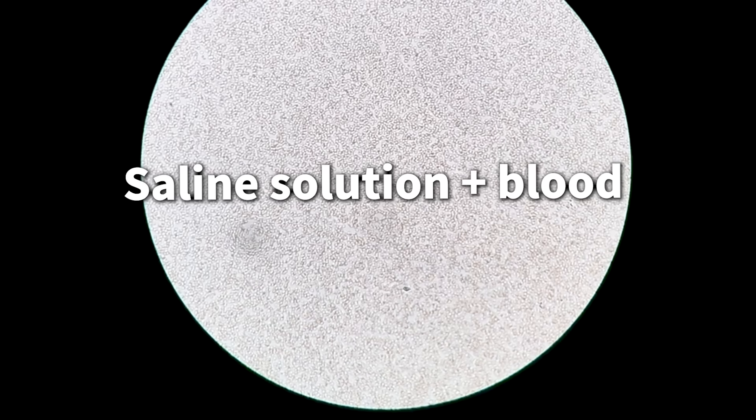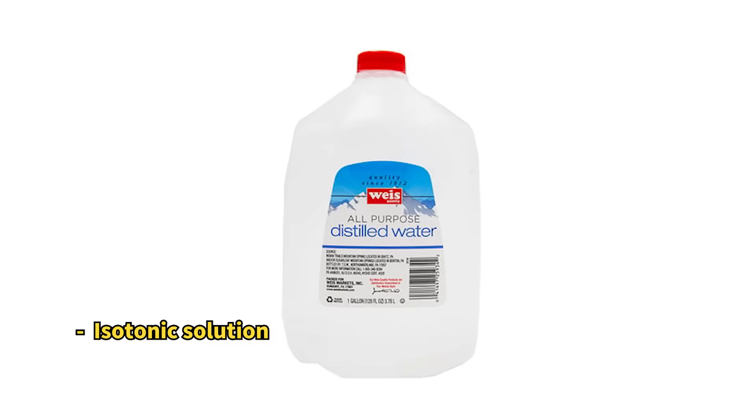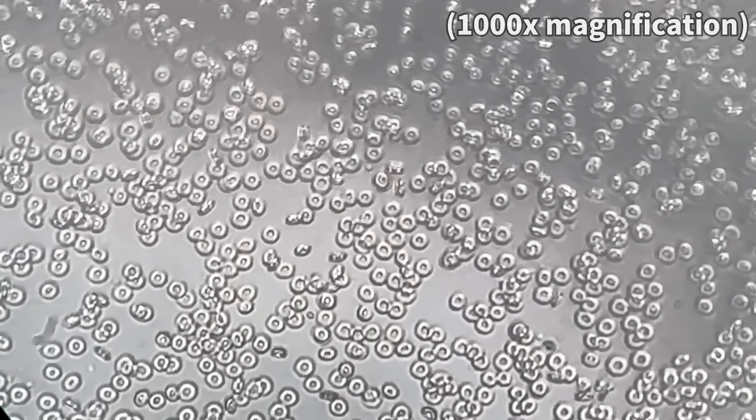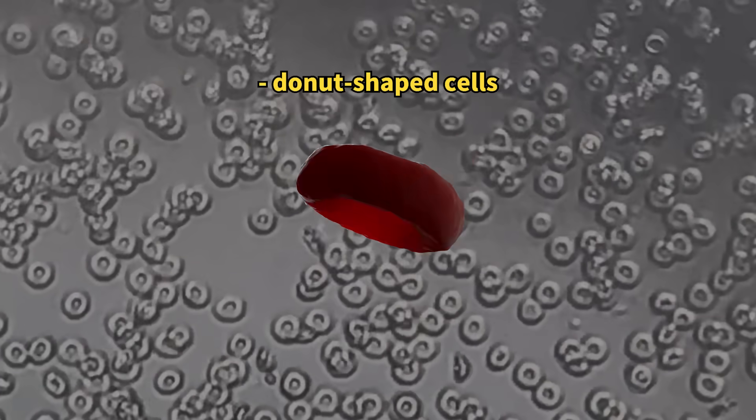Initially, when you look at the blood mixed with saline under a microscope, you'll see many red blood cells. Since saline matches the concentration of our bodily fluids, the red blood cells maintain their usual shape.